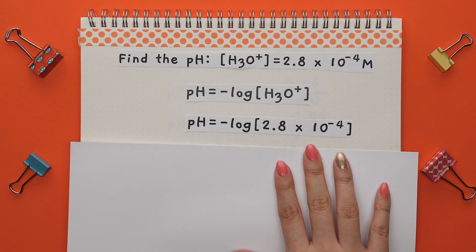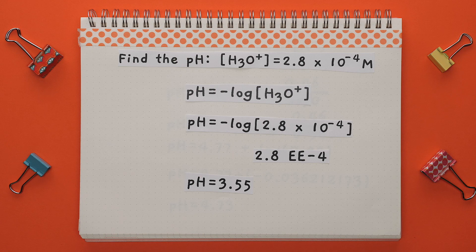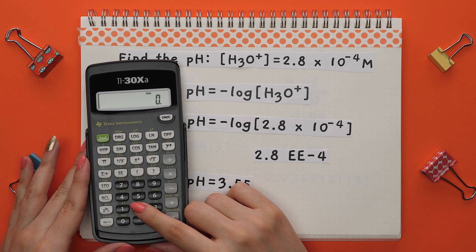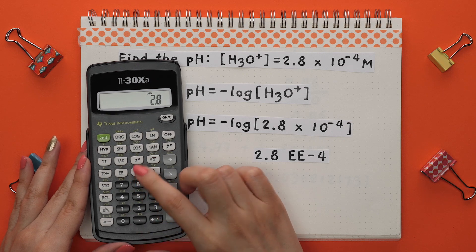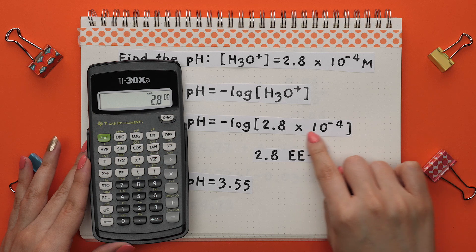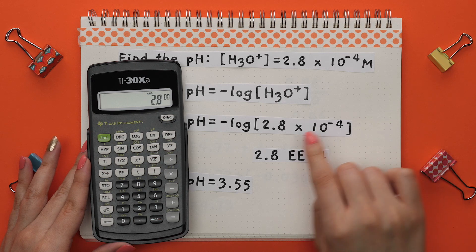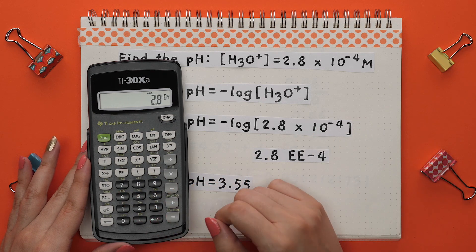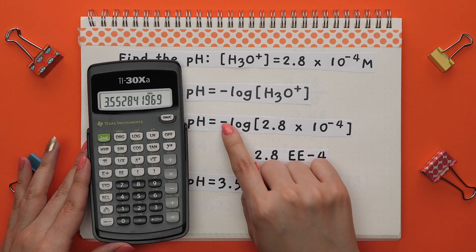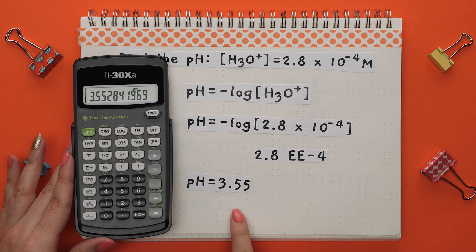So all we would do is plug in our value and plug this into our calculator. So for a scientific calculator, we would start with the number 2.8, then press EE, since this is the same as this part of our number in scientific notation, and enter a negative 4. Next, press the log button. Press the negative button to account for this negative sign. The pH is 3.55.